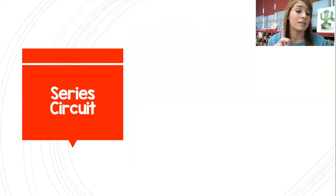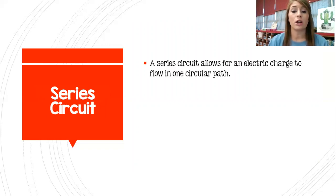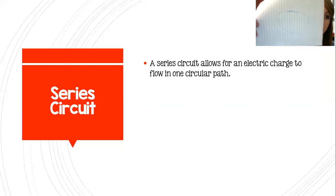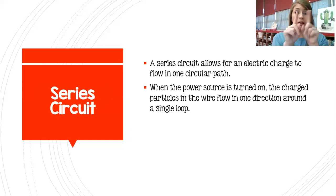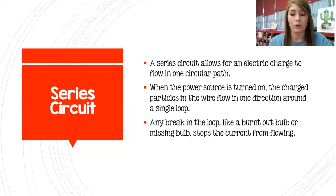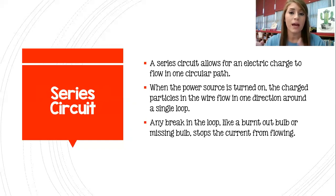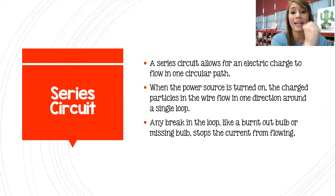There are two types of circuits. One is a series circuit. A series circuit allows for an electric charge to flow in one path — there is just one path for that electricity to follow the entire time. When the power source is turned on, the charged particles flow through that wire in one direction in a single loop. Any break in that loop, like a burnt-out bulb or a missing bulb, is going to stop that current. So if you've got a string of lights on a series circuit, if one light bulb goes out, all of them are going to turn off, because that break acts like a stop sign.